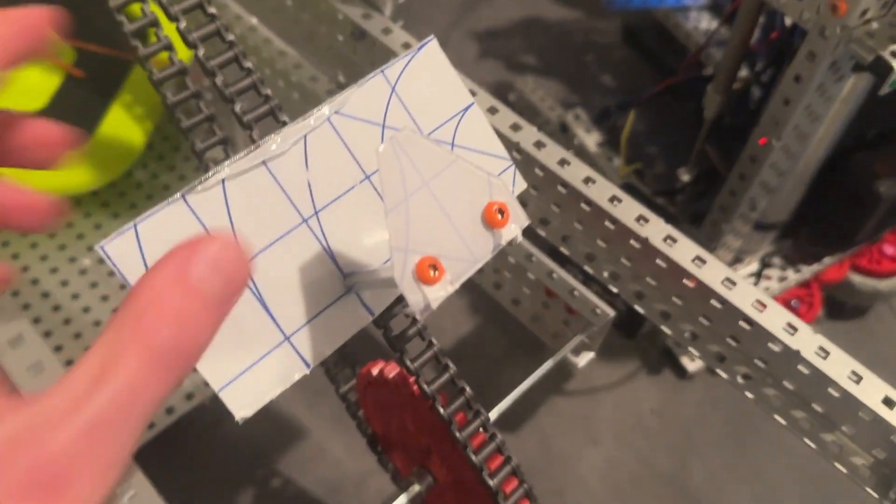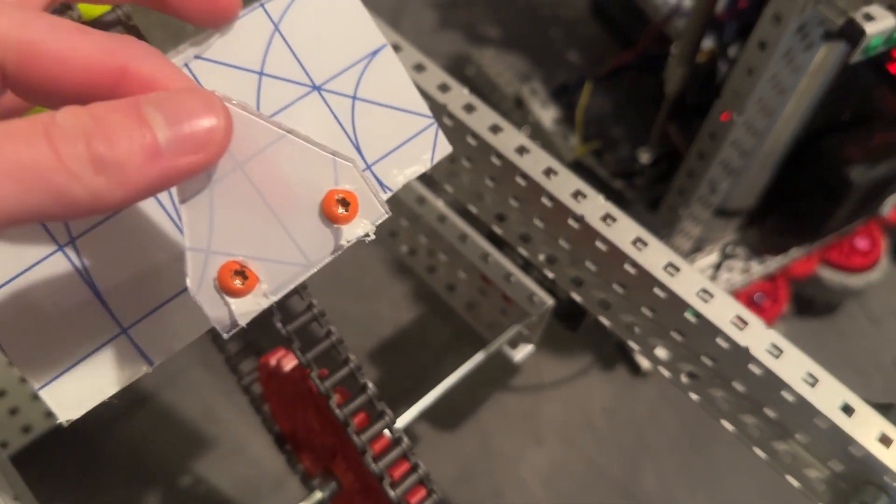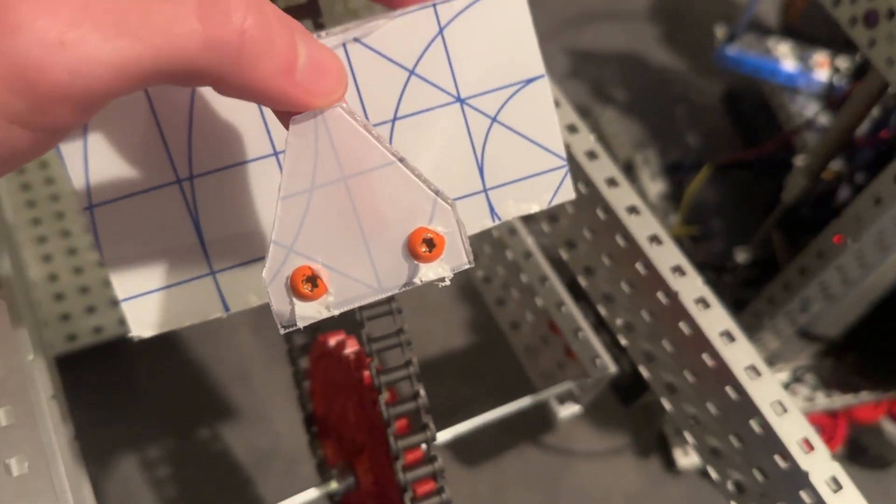So then moving on, next part is the hook. We found this shape to work pretty well. I guess that's a hexagon.